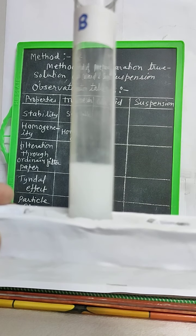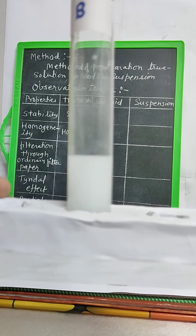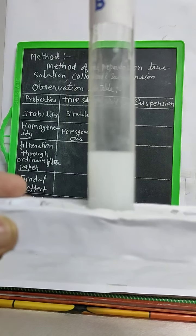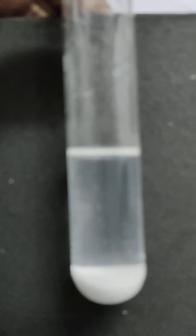Colloid appears homogeneous to the ordinary eye but is heterogeneous under microscope. It is less stable than true solution. Suspension is also less stable, with two phases separated from each other, and is heterogeneous in nature.